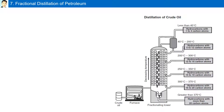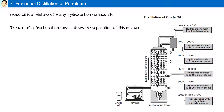Fractional distillation of petroleum: Crude oil is a mixture of many hydrocarbon compounds. The use of a fractionating tower allows the separation of this mixture, based on the different boiling points of their components. Crude oil is fed into a furnace, which is then fed into a fractionating tower, where the different components that boil at different temperatures are extracted.